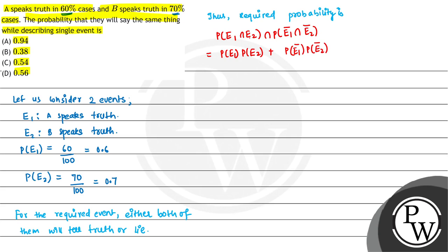E1 and E2 are independent events. If person A says truth, then person B doesn't have any effect, and vice versa. Similarly, E1 complement and E2 complement are also independent events. So we can convert the intersection directly into a product.